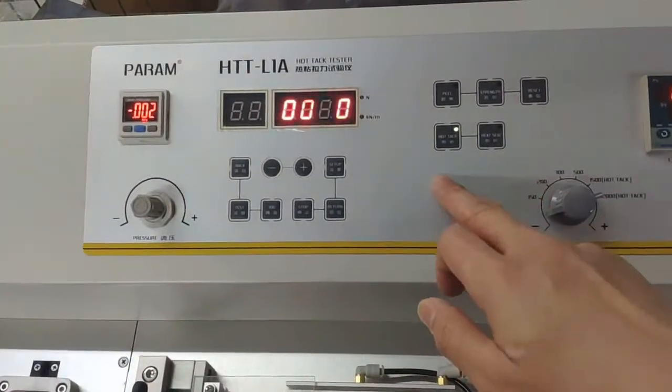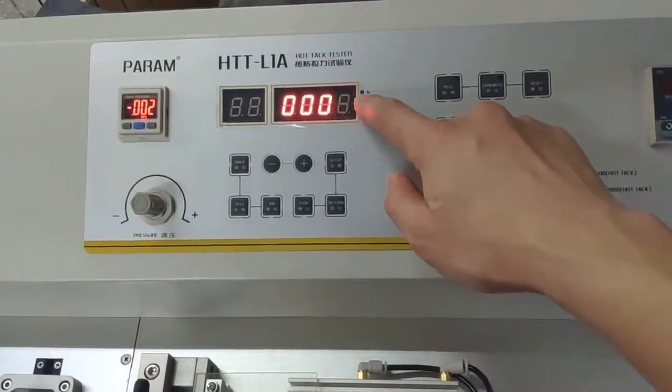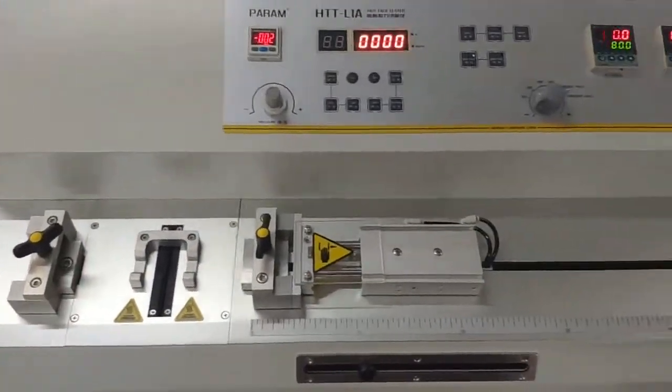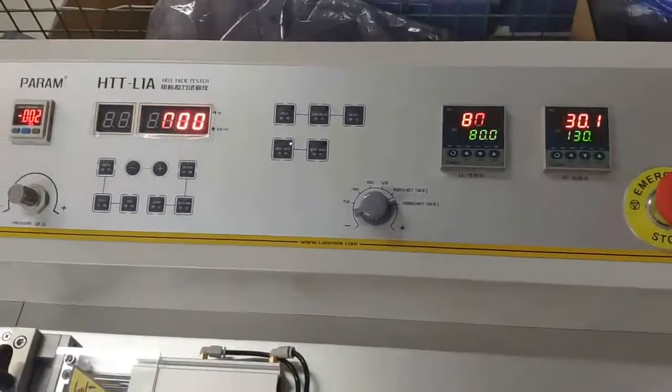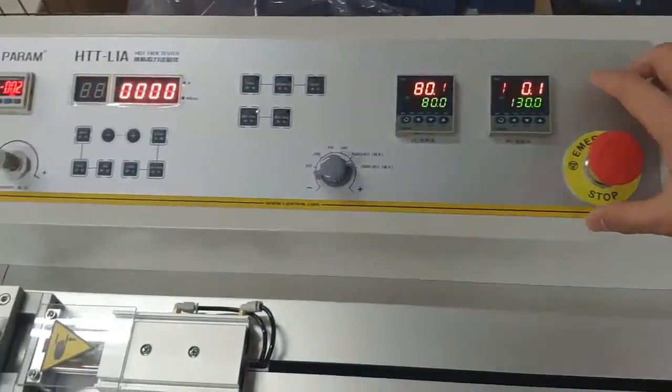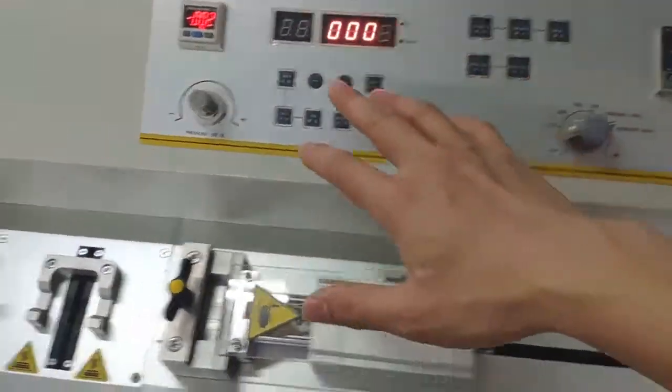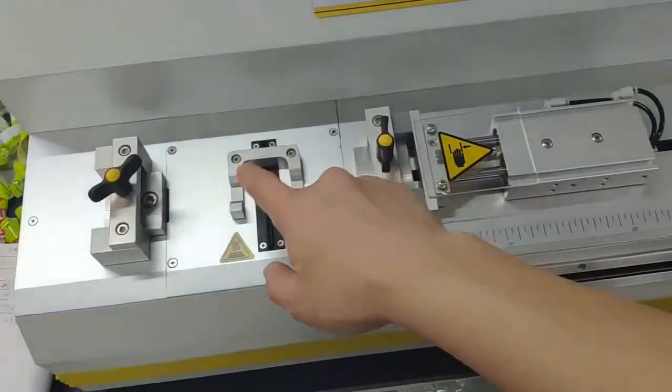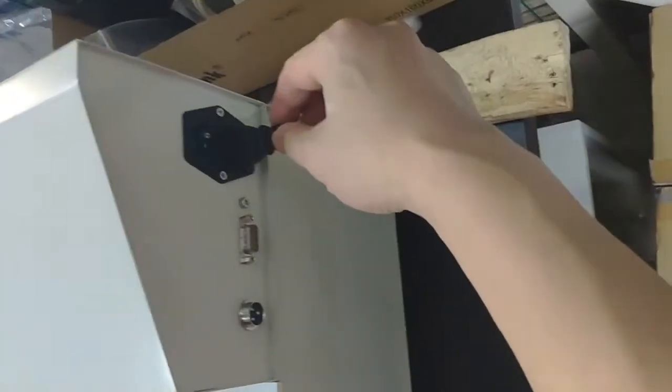This is a Hot Tack Tester HTT-01A. Let's introduce this instrument. Here is the front panel, and here is the test area with two grips and a sample area. On this side you can see the power cable.